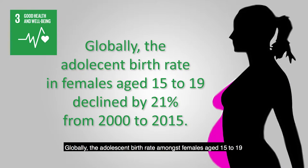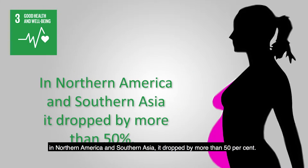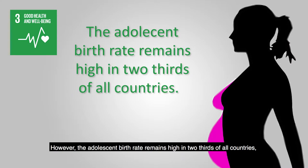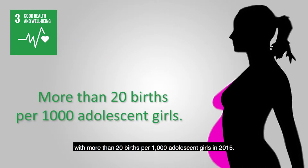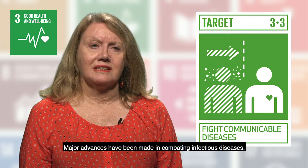Globally, the adolescent birth rate amongst females aged 15 to 19 declined by 21% from 2000 to 2015. In Northern America and Southern Asia, it dropped by more than 50%. However, the adolescent birth rate remains high in two-thirds of all countries, with more than 20 births per 1,000 adolescent girls in 2015. Major advances have been made in combating infectious diseases.